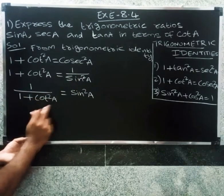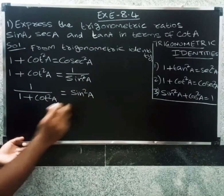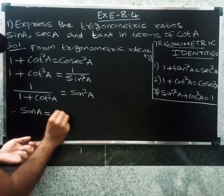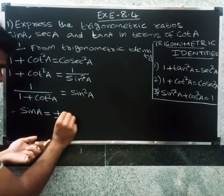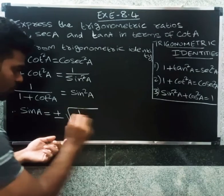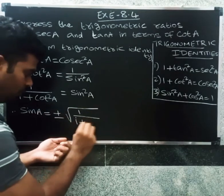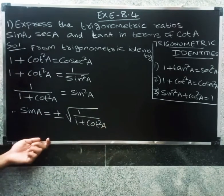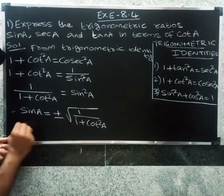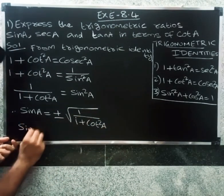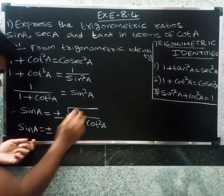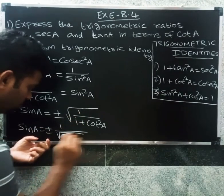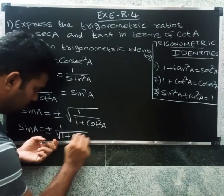Therefore, sine a equal to plus or minus root of one divided by one plus cot square a, which simplifies to plus or minus one divided by root of one plus cot square a.